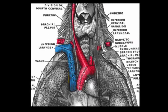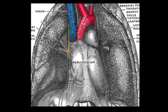Focusing on the phrenic nerve, this arises from the third, fourth, and fifth cervical roots. Here we are on the right-hand side, picking it up coming down, passing behind the superior vena cava into the mediastinum, then coming down, running down the right-hand border of the heart.